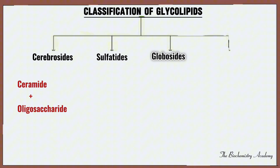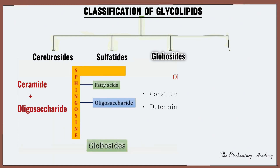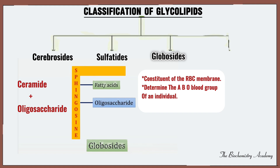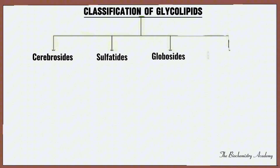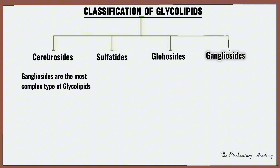The third classification of glycolipids are the globosides. Globosides are made up of a ceramide plus an oligosaccharide. The function of globosides is that they are the constituents of the red blood cell membrane and they are used to determine the ABO blood group of an individual.